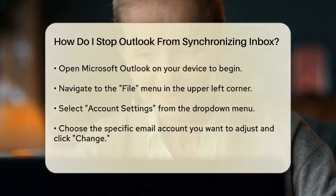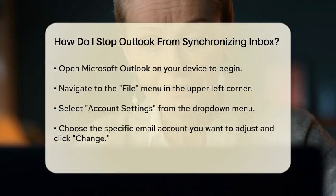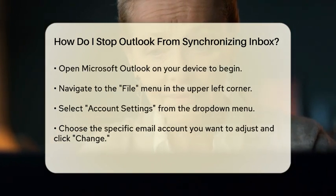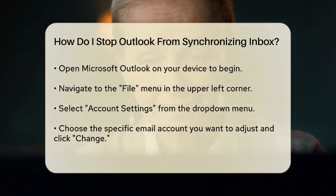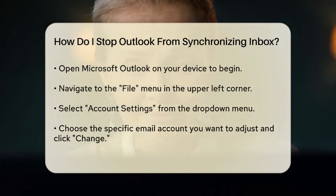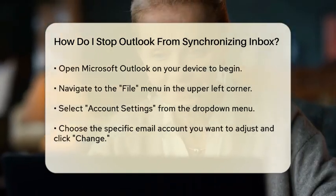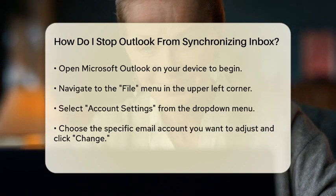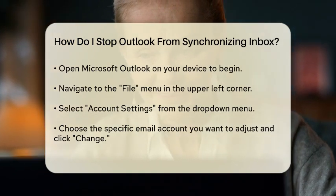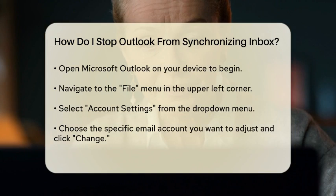To stop Outlook from synchronizing your Inbox, you can adjust the settings within the application. Start by opening Microsoft Outlook on your device. Once the application is open, navigate to the File menu located in the upper left corner of the window. From there, select Account Settings, and then click on Account Settings again from the drop-down menu.